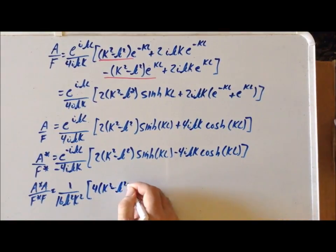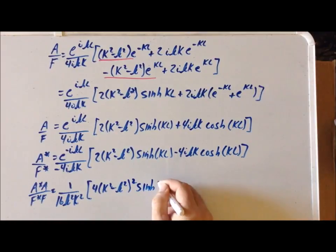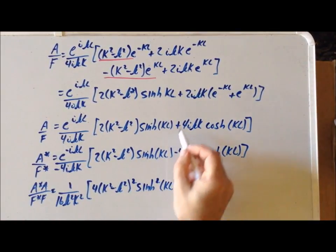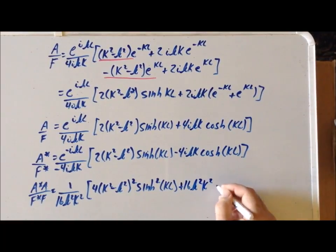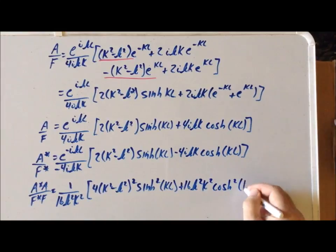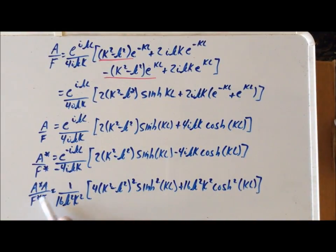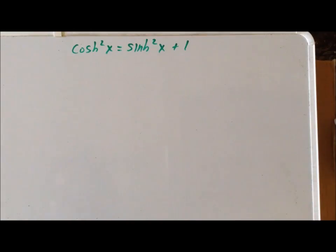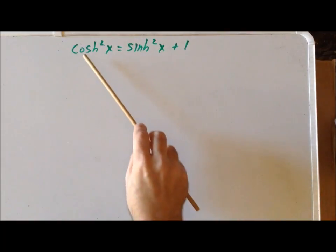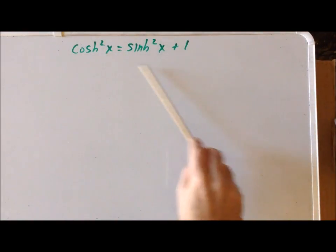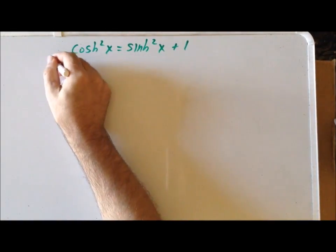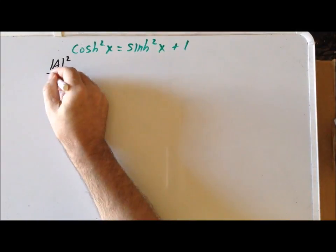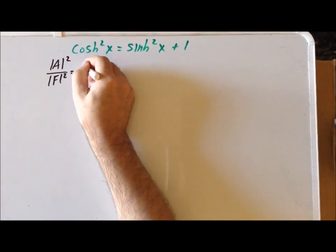Now we have a sum and difference. So we have 4 times K squared minus small k squared, quantity squared, times the hyperbolic sine squared of KL. And then we have minus 16 i squared, which is simply plus 16 small k squared big K squared times the hyperbolic cosine squared of KL. So now we have an expression for the ratio of the probability of A to the probability of F. In the next step, we'll utilize the identity that the hyperbolic cosine squared of x equals the hyperbolic sine squared of x plus 1. Also, we're going to rewrite A-star A as the modulus of A squared, and F-star F as the modulus of F squared.